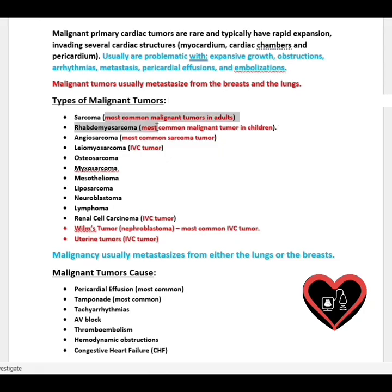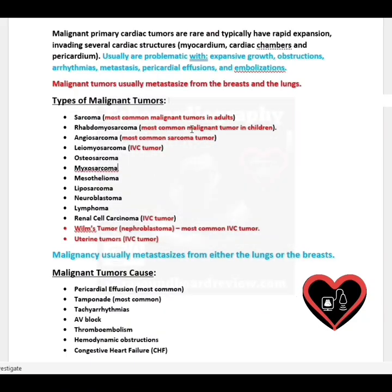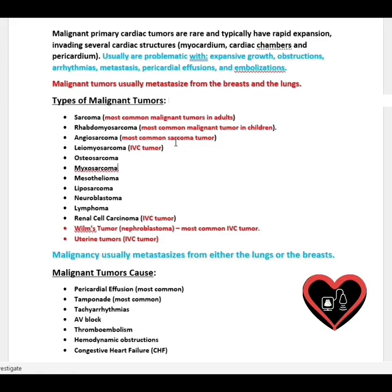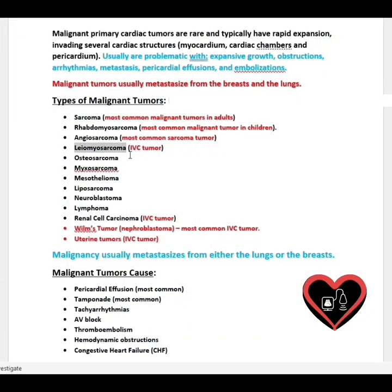The most common malignant tumor in adults is a sarcoma, and the most common malignant tumor in children is a rhabdomyosarcoma. The most common sarcoma is an angiosarcoma. A leiomyosarcoma is considered to be an IVC tumor, and these can grow along the IVC. A renal cell carcinoma is also called an IVC tumor. A Wilms tumor, also called a nephroblastoma, is the most common IVC tumor. It's also worth noting that malignancy usually metastasizes from either the lungs or the breasts.